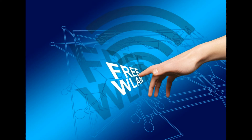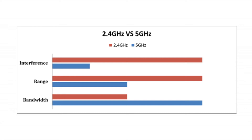The 5 GHz band supports larger bandwidth and speed, but the range of 5 GHz is less as the frequency is more. So a 5 GHz band provides better speed at a shorter range, while a 2.5 GHz band has a longer range but slower speeds.